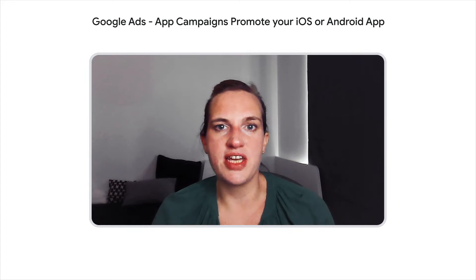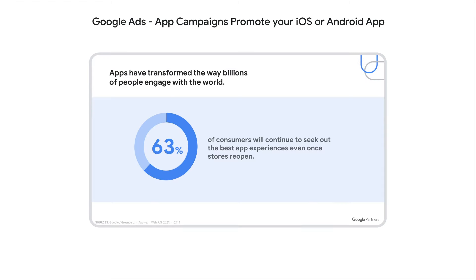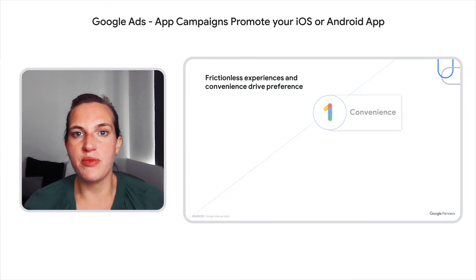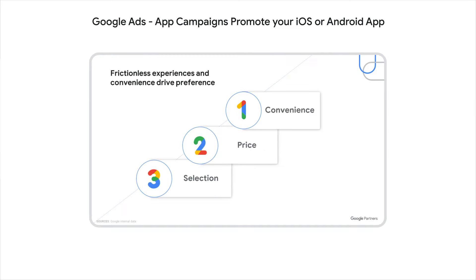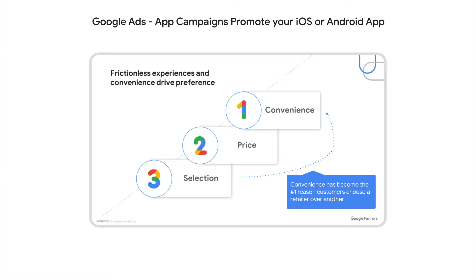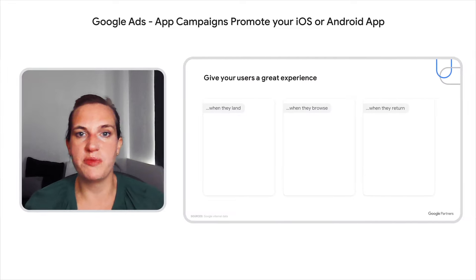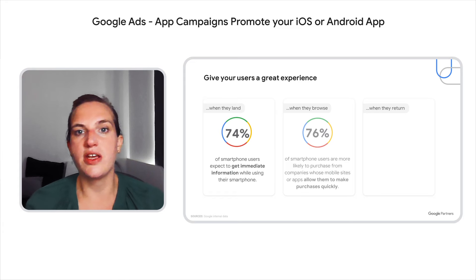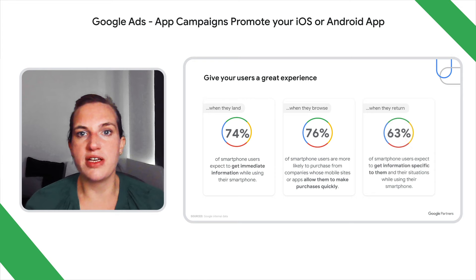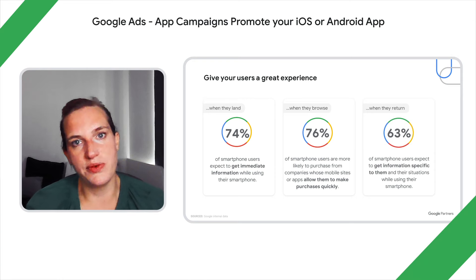Have a think: how has your device and app usage changed over the last one and a half years? Apps have transformed the way we interact with the world, which is why users continue to use app experiences now that stores have reopened. What makes consumers choose a brand? The number one reason is convenience, followed by price, and selection in third place. Take Amazon as an example — they've perfected all of these with Prime delivery, easy returns, no-questions-asked refunds, a fast app, and so much more. You have to make sure your users have a great experience because they expect nothing less. They want to find information fast, act quickly, and have a personalized experience. The demands on apps are high, but so is their business value.